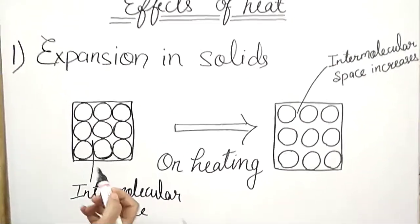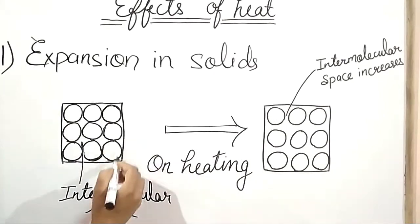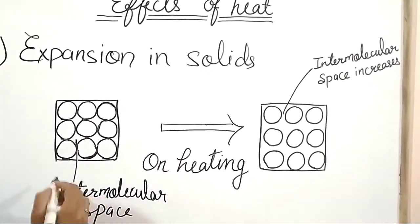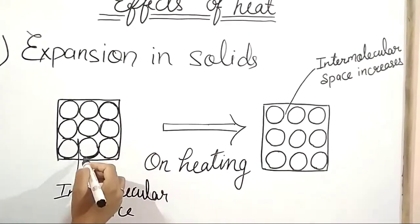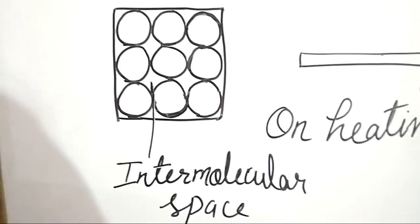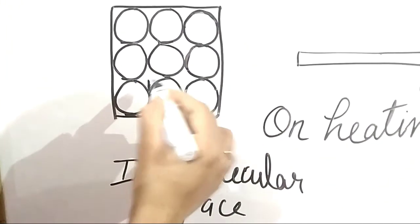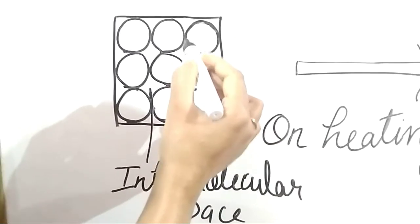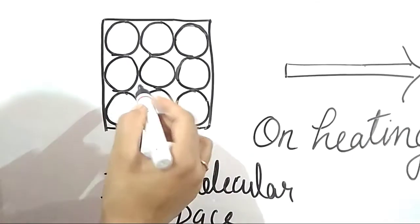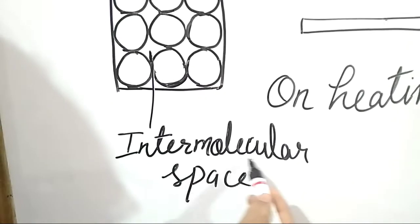So first we will see expansion in solids. Here I have taken a small part of a solid. You can see these are the molecules of solids — they are tightly packed to each other. Between these molecules you can see a small space; they are tightly packed, meaning they are in contact with each other, so there is very less space. This space between the molecules is known as intermolecular space.